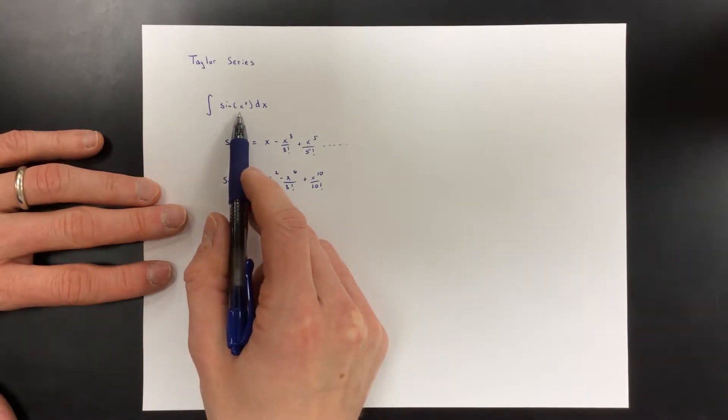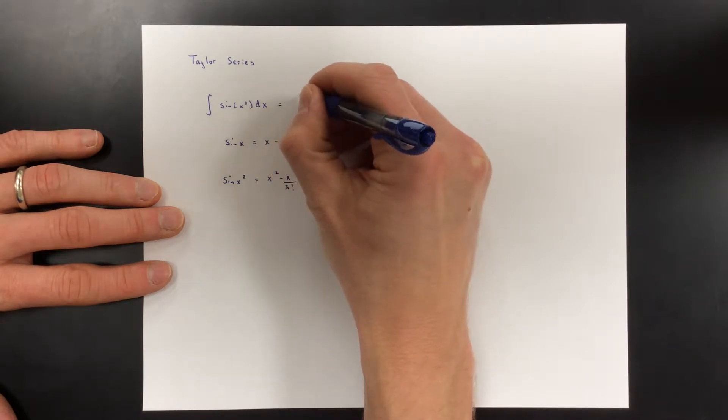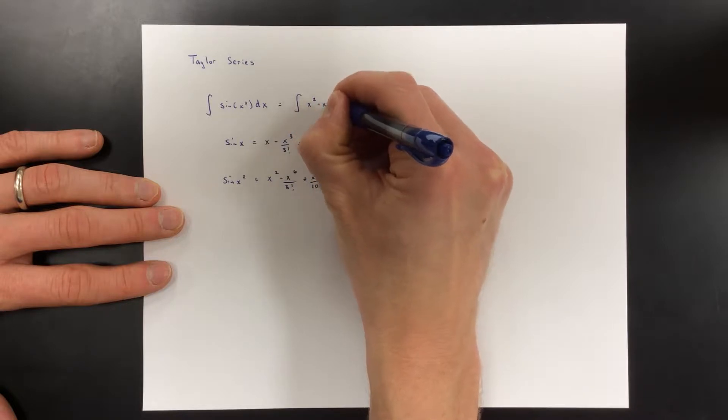And what we're going to do here, instead of integrating sine x squared, we're just going to integrate its polynomial approximation and say well if those two things are the same function then they have to have the same integral.